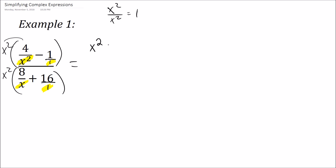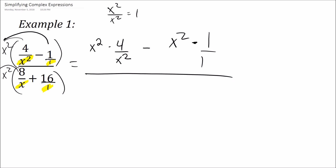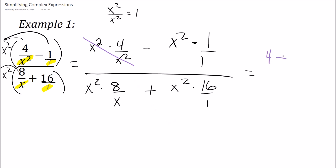I'm going to write this all out. It's going to be x squared times 4 over x squared, then x squared times 1 over 1. On the bottom we get x squared times 8 over x, plus x squared times 16 over 1. Simplifying: x squared divided by x squared is just 1, so the numerator gives me 4 minus x squared. On the bottom, x squared over x gives me 8x, plus x squared times 16 gives 16x squared.